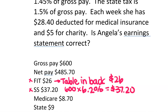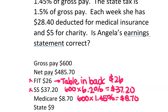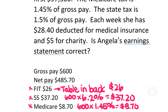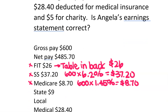Medicare is 1.45%, so 600 times 1.45%. We're just checking these, so we're just multiplying them out to make sure they are okay. $8.70 is correct. State tax is 1.5%, so 600 times 1.5%. $9.00 is correct.